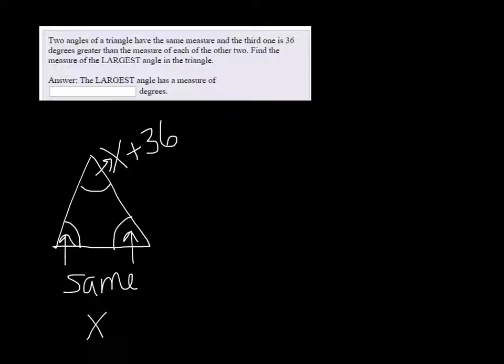And when you add the three angles together, angle 1, angle 2, and angle 3, of any triangle, it equals 180.